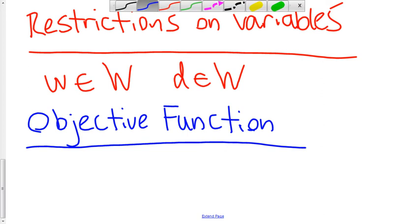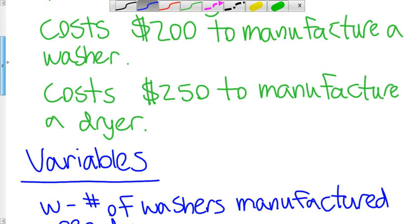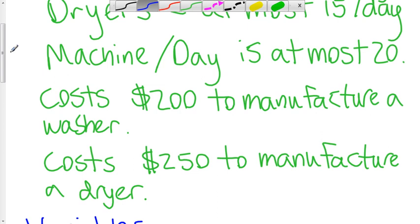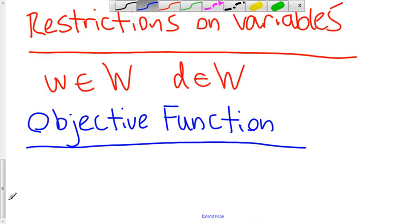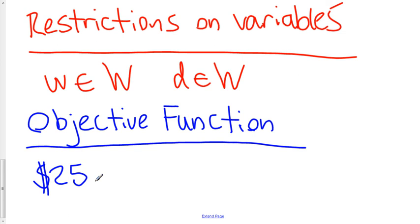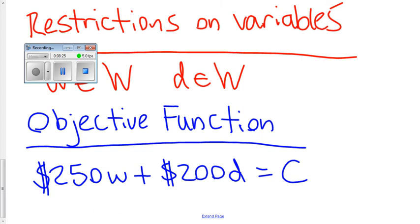So what is the cost? Well, if we go back up here, it says that the cost to manufacture a washer is $200, the cost to manufacture a dryer is $250. That tells me that 200W plus 250D is going to give us our cost. And there we have our objective function. And that is how you model a linear optimization problem.